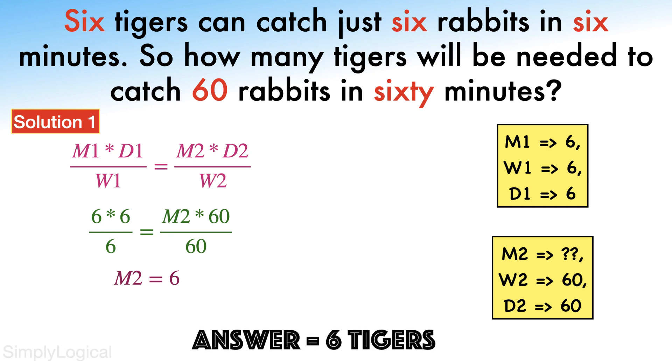After solving this we get M2 equals 6. Therefore 6 tigers will be needed to catch 60 rabbits in 60 minutes. This is the formula based approach. Sometimes the formula is not required in order to solve this problem.